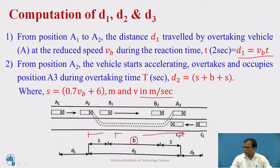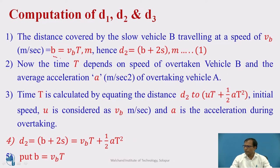The slow-moving vehicle B1 is traveling at speed VB meters per second. Knowing the overtaking time T, the distance b equals VB multiplied by capital T. So b is defined as VB into T, where VB is in meters per second. Therefore D2 equals B plus 2S.